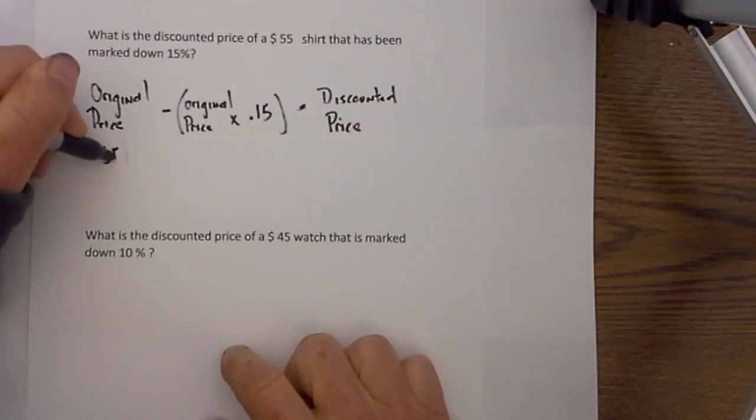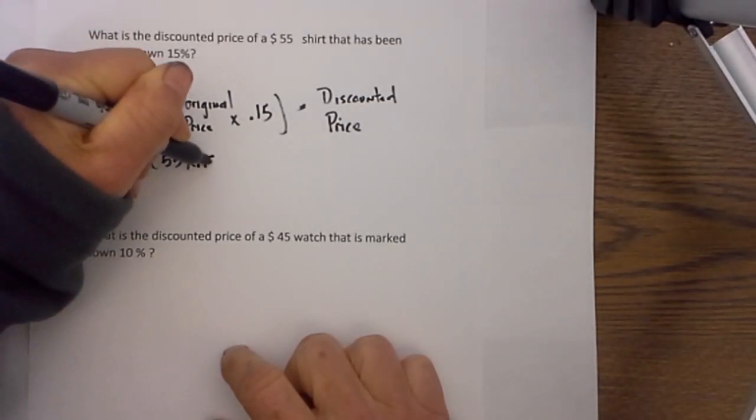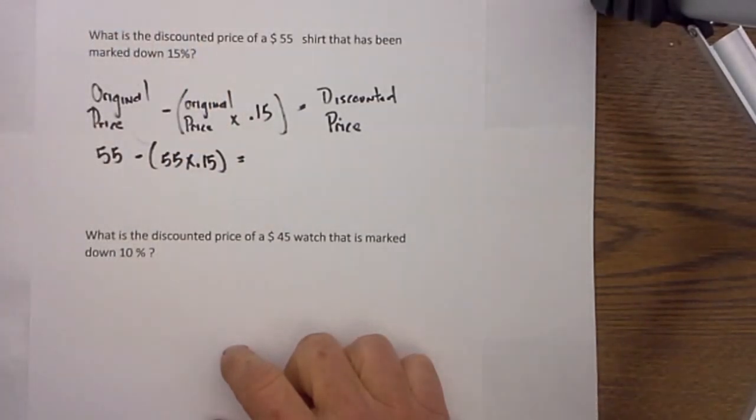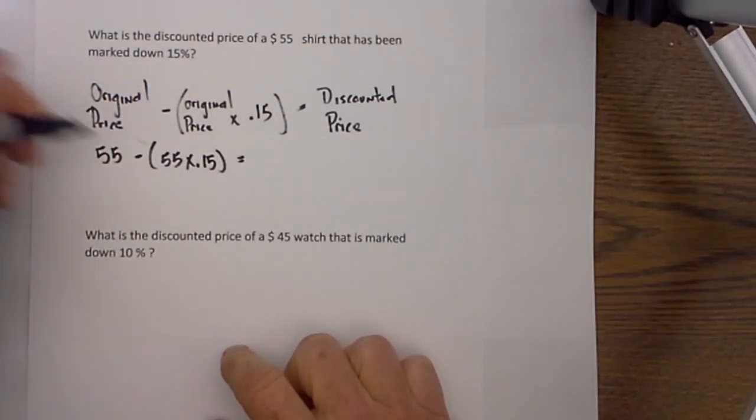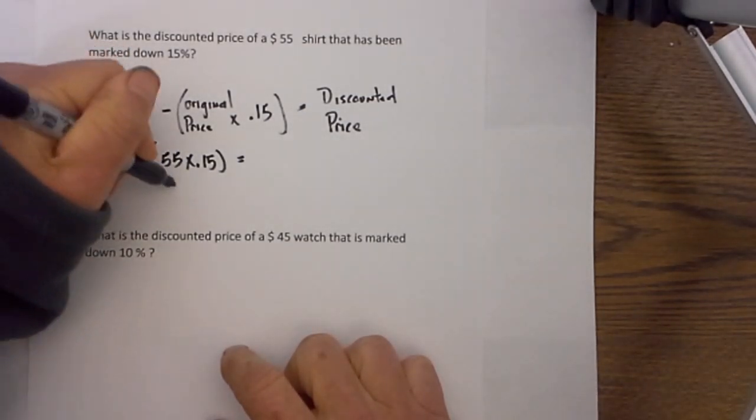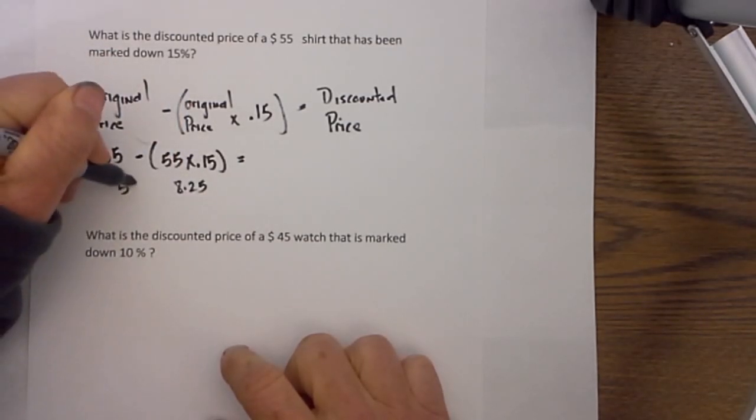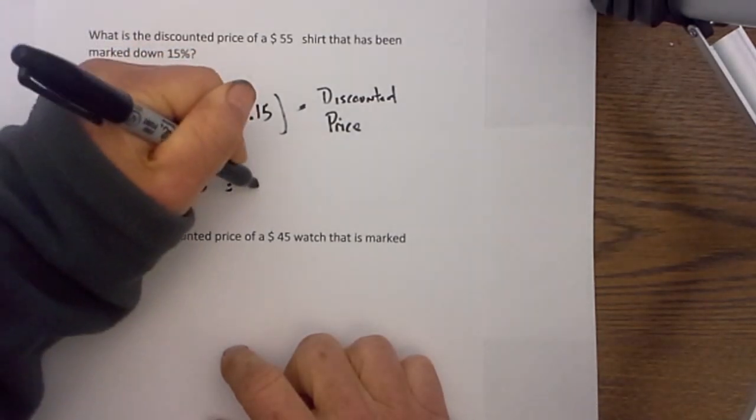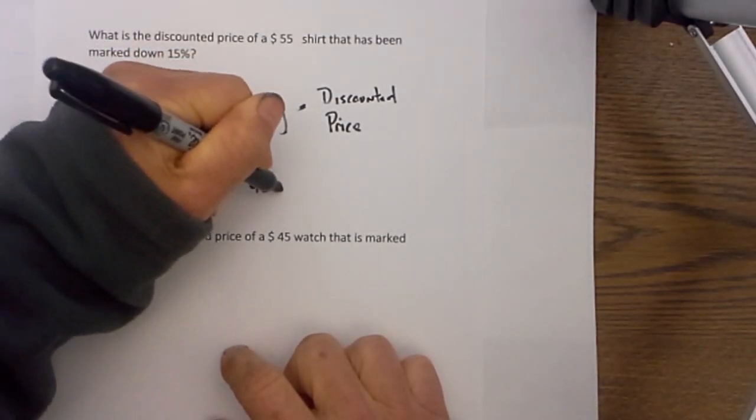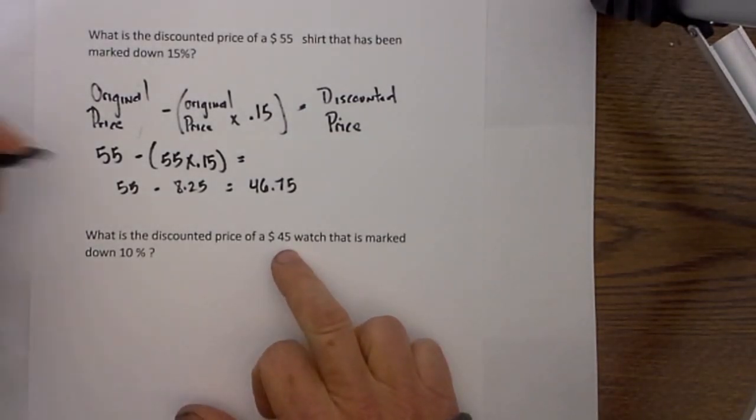Original price is $55 minus 55 times .15 equals the discounted price. 55 times .15 is 8.25, so that means 55 minus 8.25 will equal a discounted price of $46.75. Now there is a shortcut to this if you would like.